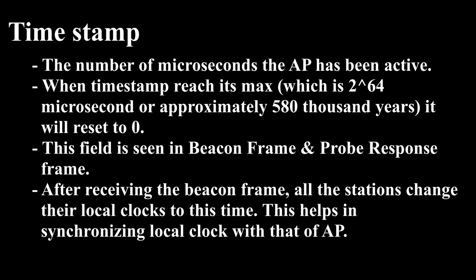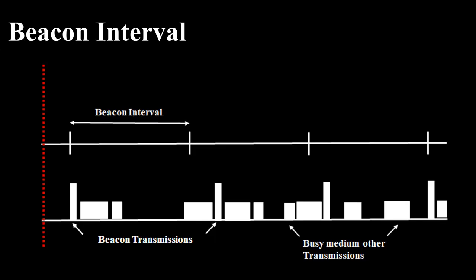Timestamp (8 byte): A value representing the time on the access point, which is the number of microseconds the AP has been active. When the timestamp reaches its max — which is 2 to the power of 64 microseconds, or approximately 580,000 years — it will reset to zero. This field is contained in beacon frames and probe response frames. After receiving the beacon frame, all stations change their local clocks to this time, helping synchronize local clocks with that of the AP.